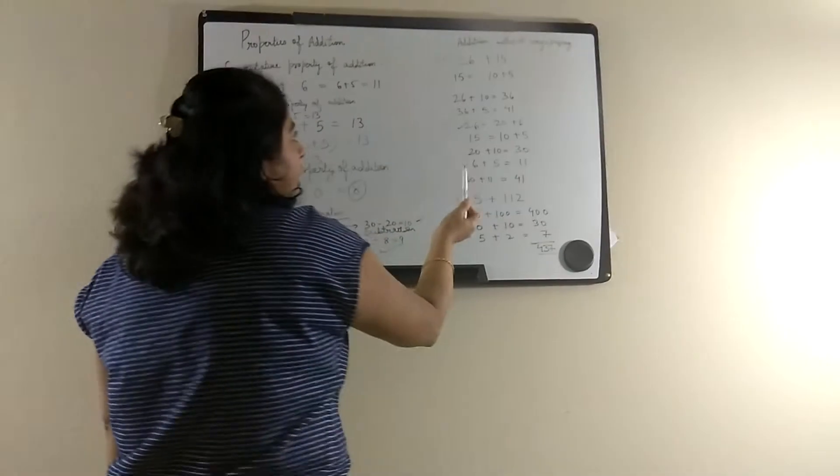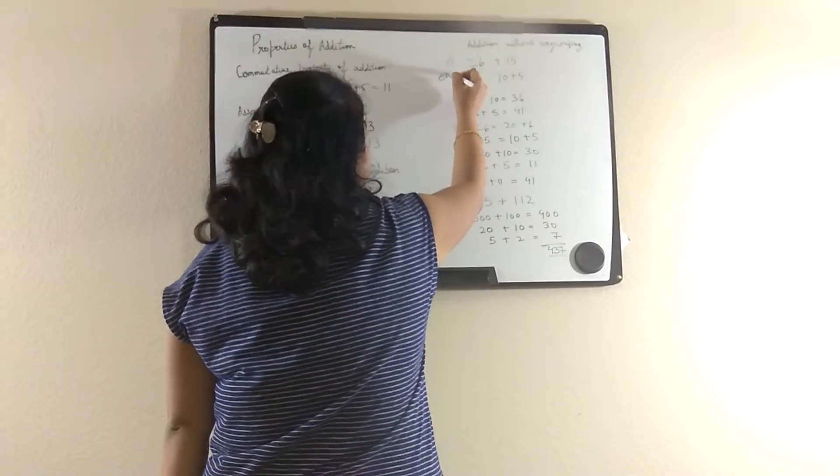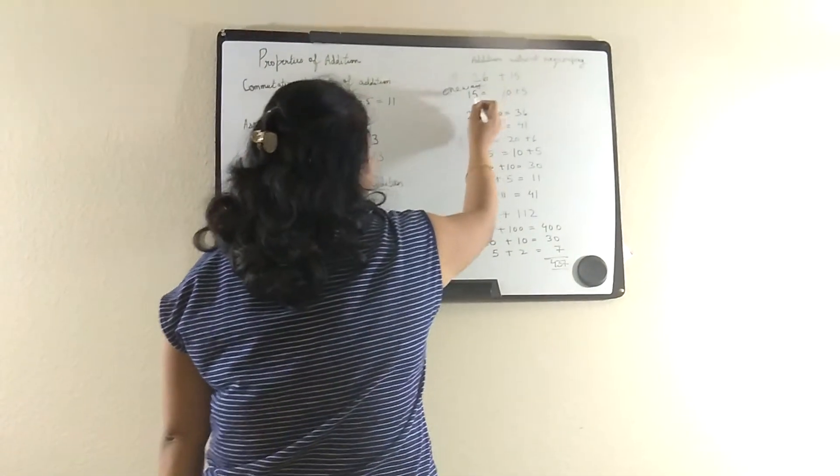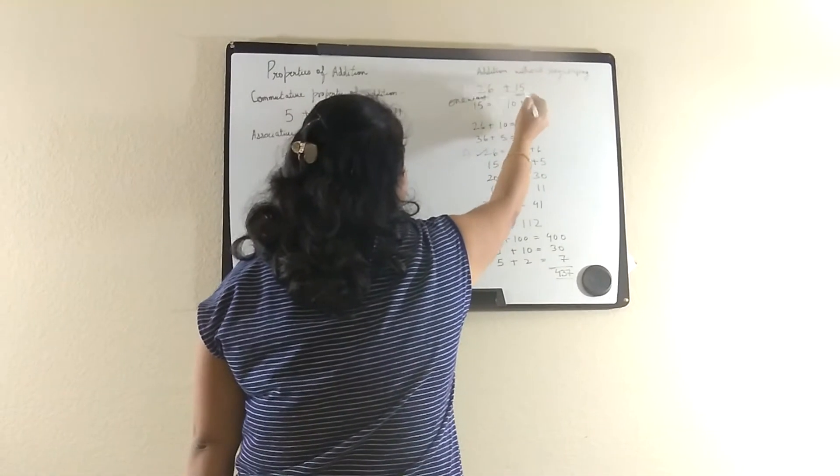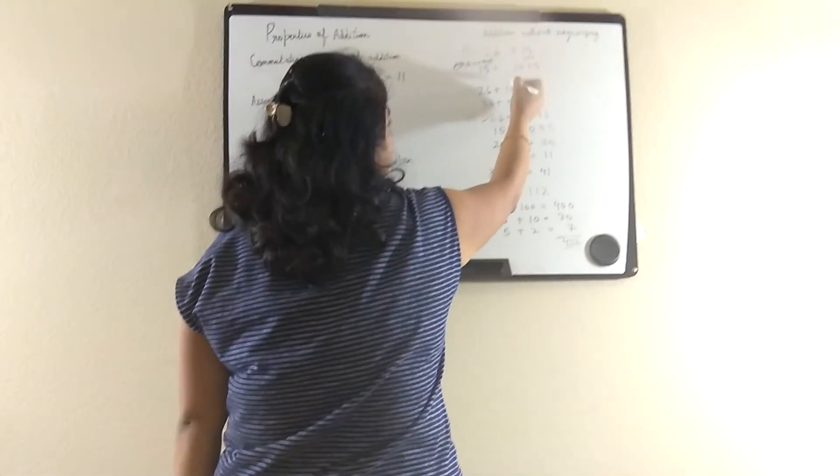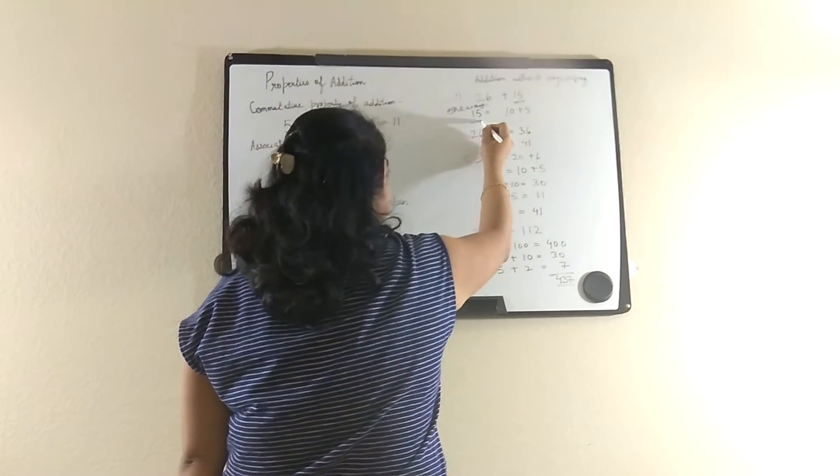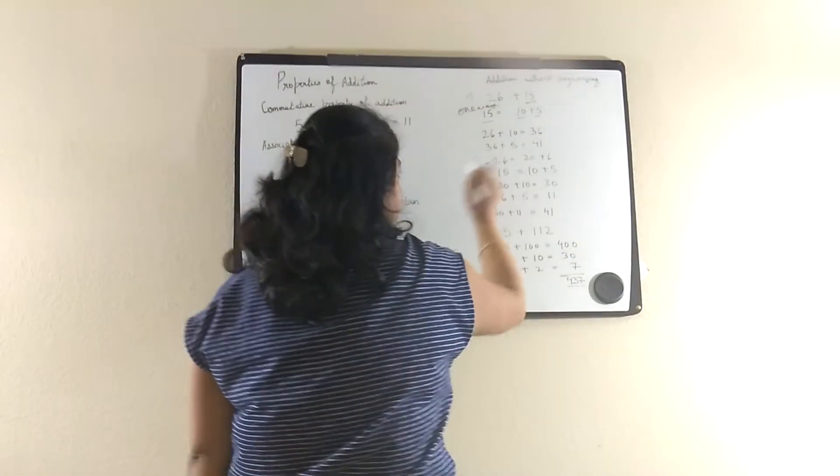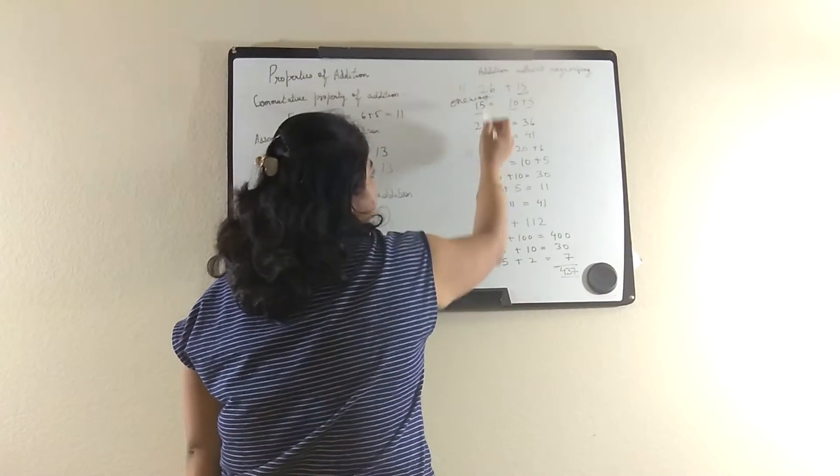26 plus 15. So there is one way: you first break the smallest number into tens and ones. So 15 is 10 plus 5. And then add 10 to the first number. So 26 plus 10 will be 36.